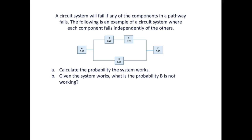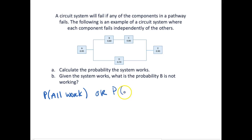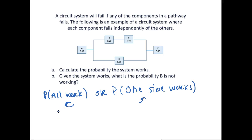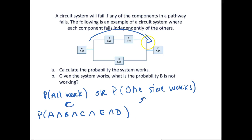If the system works, there are a couple of things that could be happening. The first event could be that all of the elements work, or it could be that only one side works. So how many ways can each of these happen?